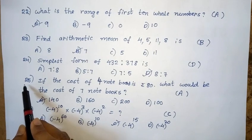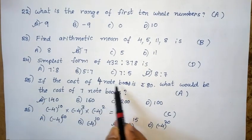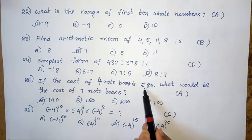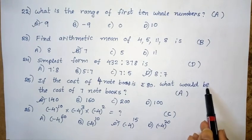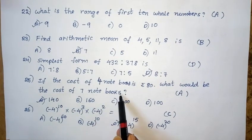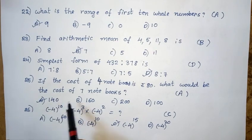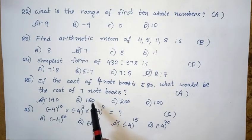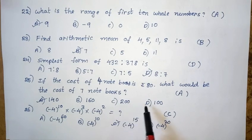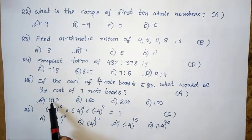Twenty-fifth question: If the cost of 4 notebooks is 80 rupees, what would be the cost of 7 notebooks? Option A: 140. Option B: 160. Option C: 200. Option D: 100. The right answer is option A — 140.